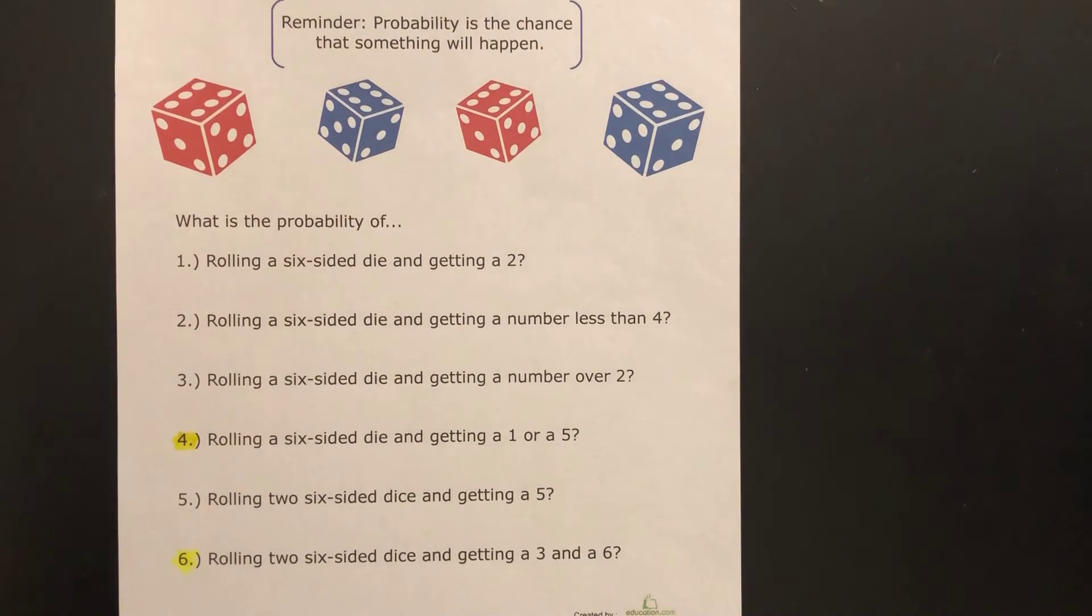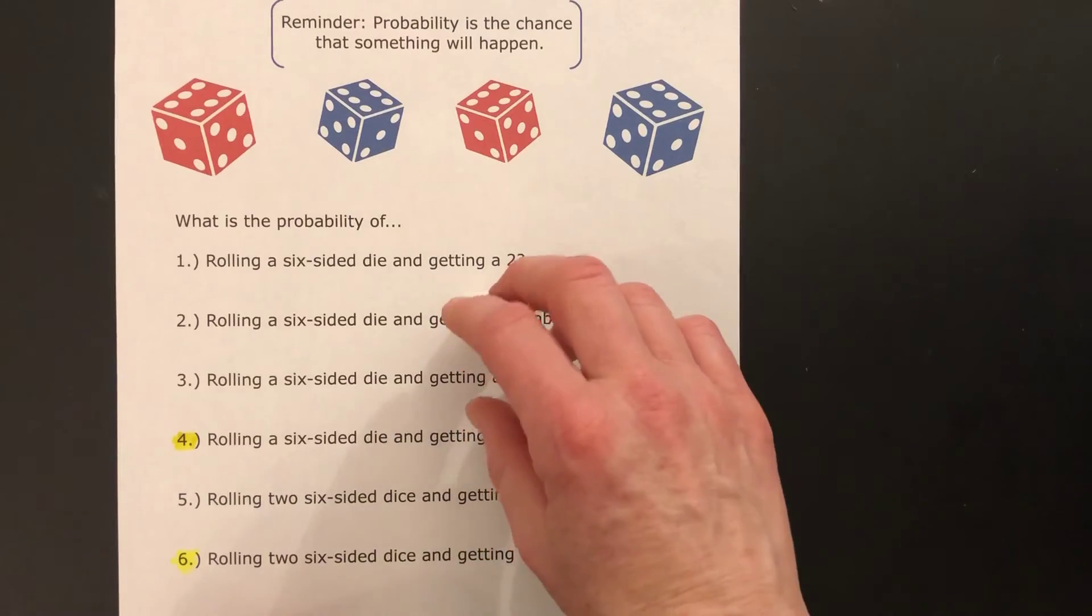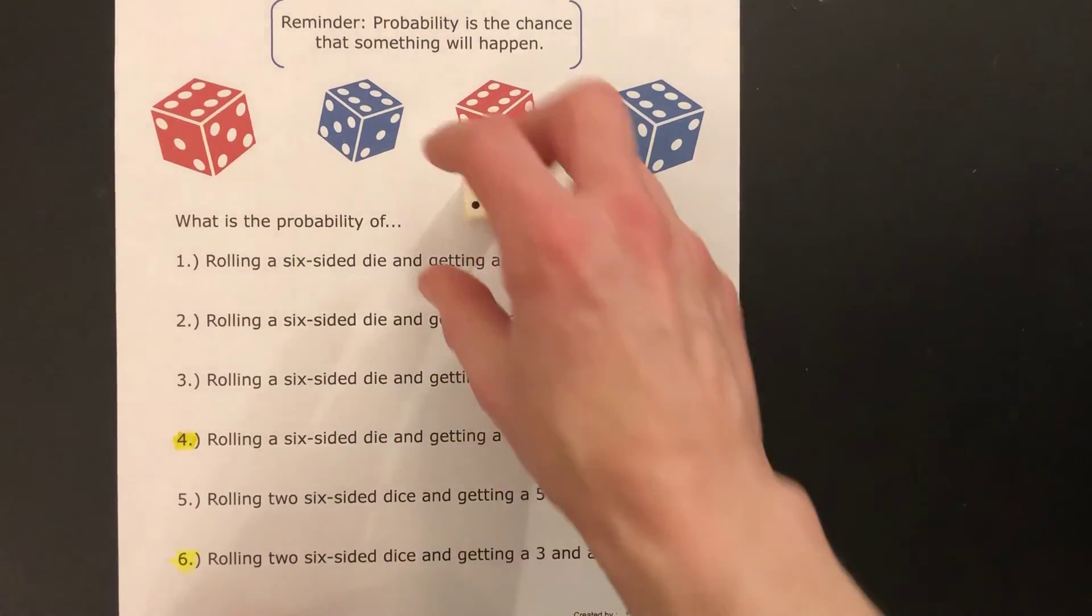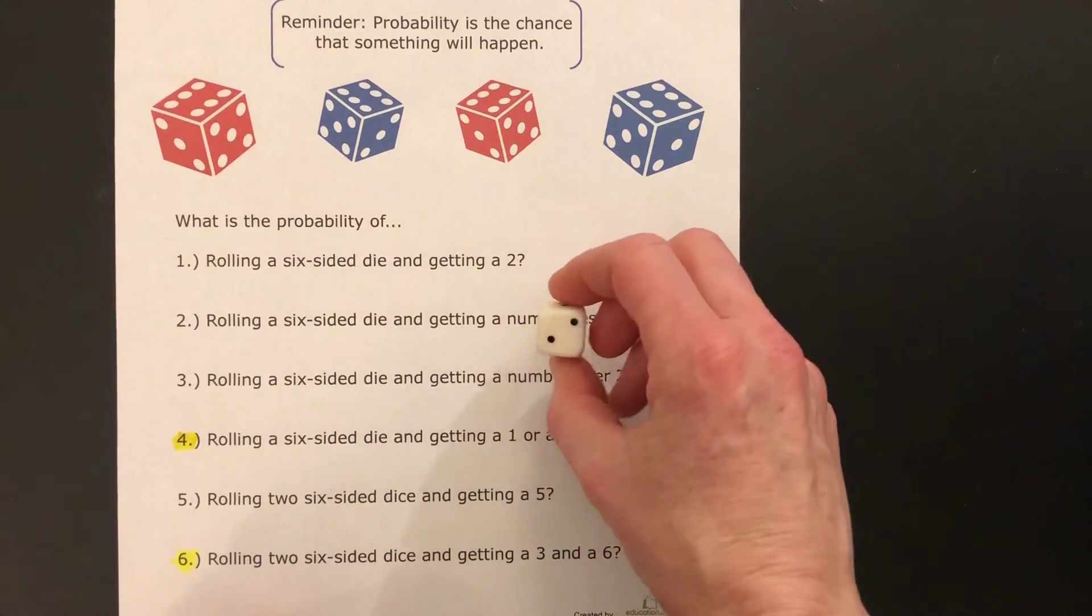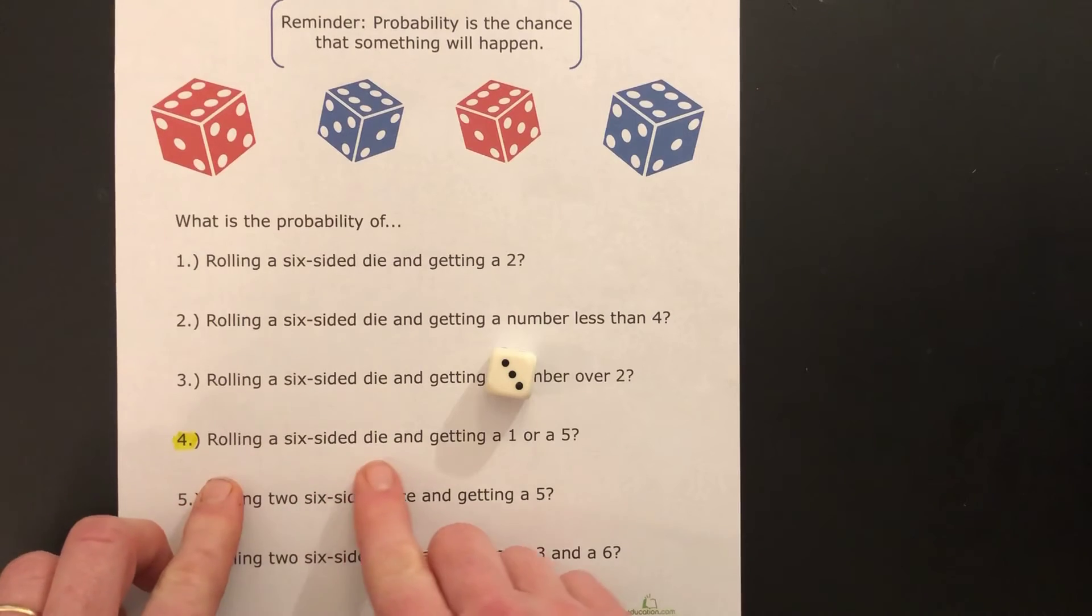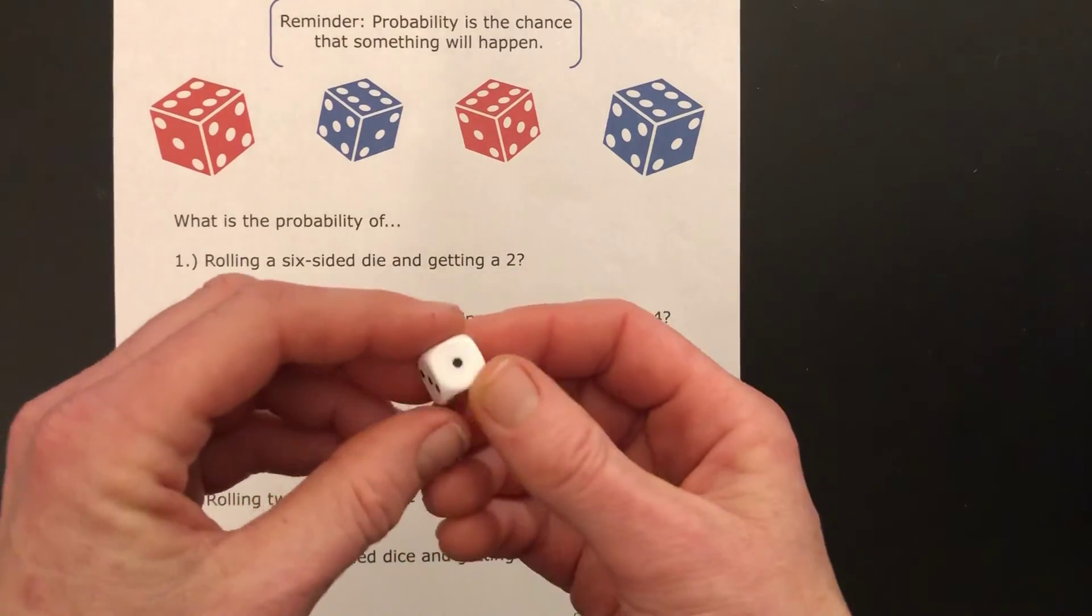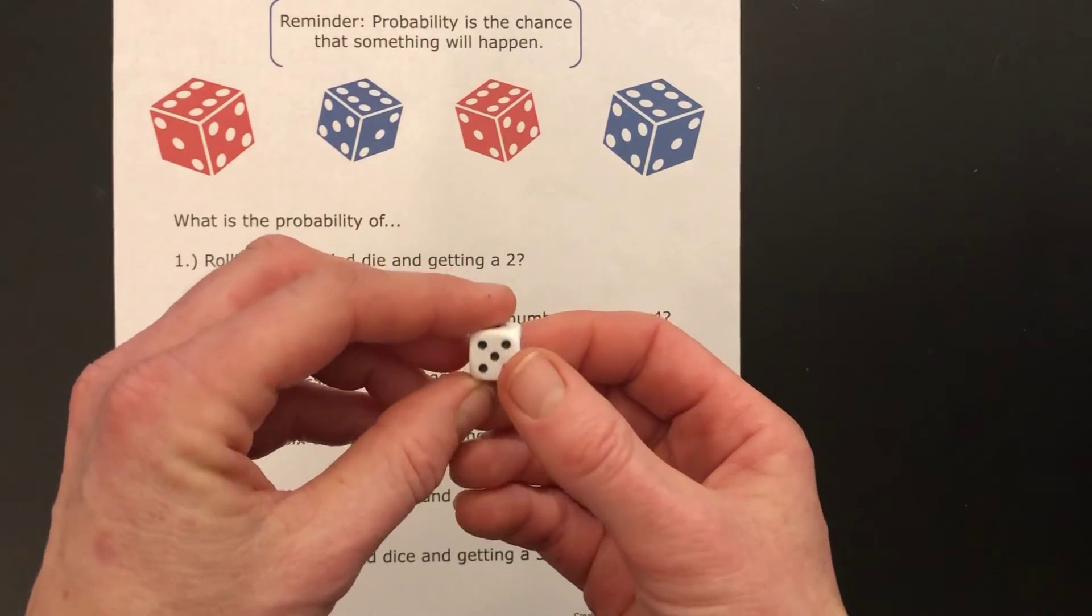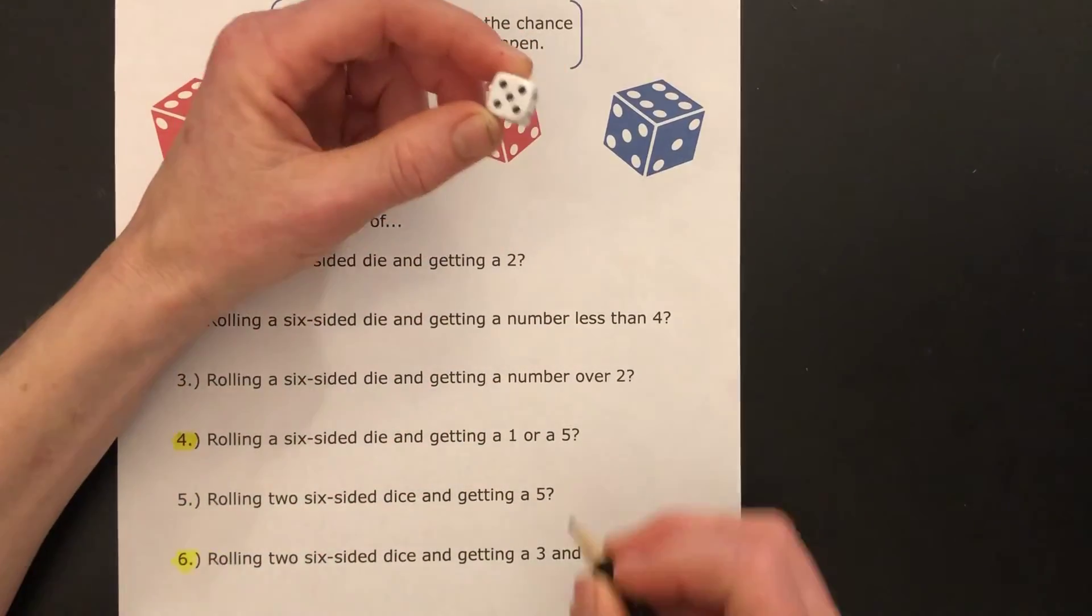Looking at the second page, on this page we have a die and roll a die. Now the first thing we need to do is determine what are the possible outcomes or how many are there. It's got six sides, one number on each side, so there are six possible outcomes. Now that we've established that, let's go ahead. Rolling a six-sided die and getting a one or a five. All right, so a one or a five. There are two sides that have either one or five, so that means we have a probability of two out of six, and that reduces to one-third.